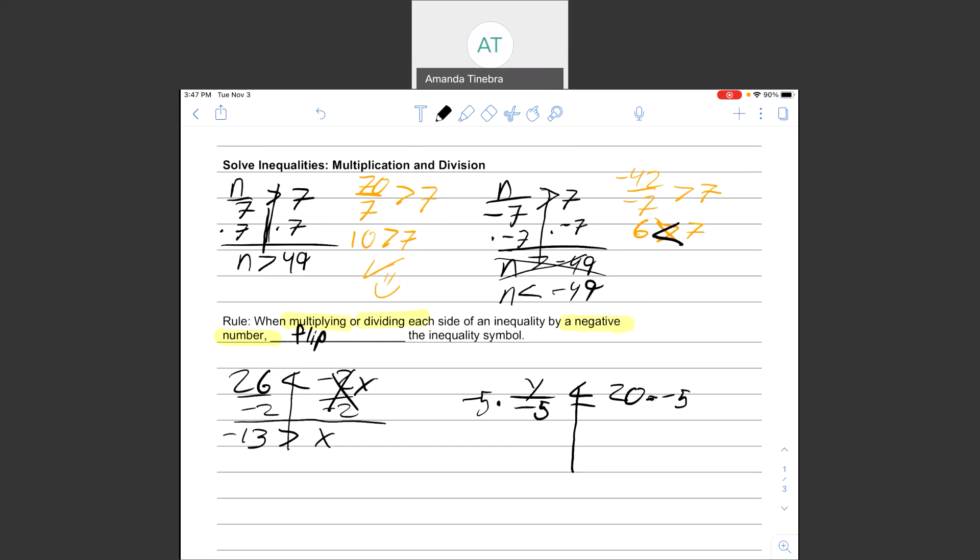Multiplying by a negative number means I have to flip my inequality. And I'm left with y is greater than or equal to negative 100.